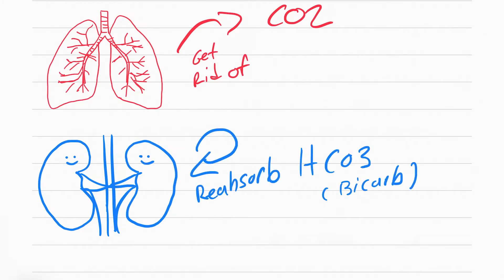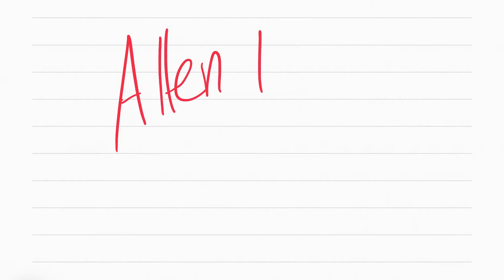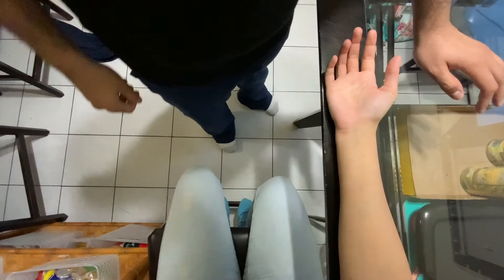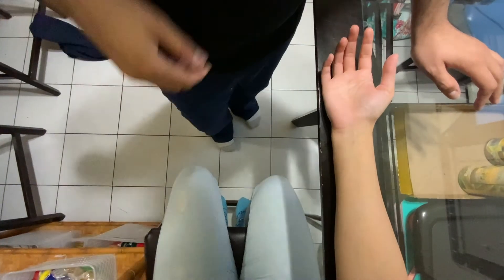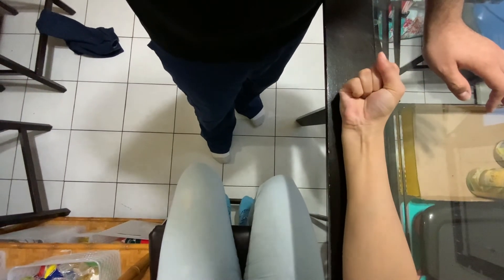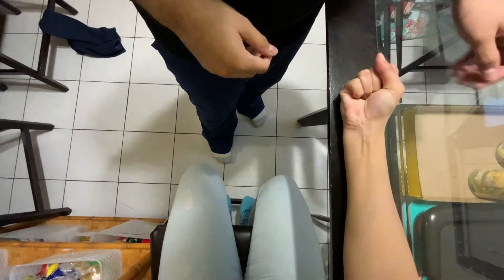These labs are called arterial blood gases — blood gases that we get from arterial blood. In order to get arterial blood, we have to do something called the Allen test. But why tell you when I can show you? So this is how you do it — can you pump your hand and then make a fist?